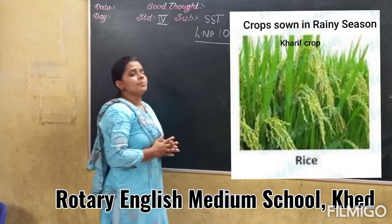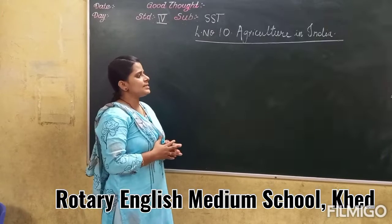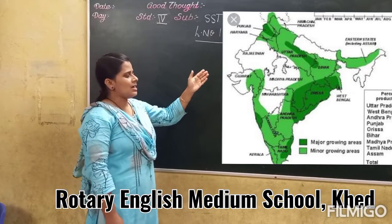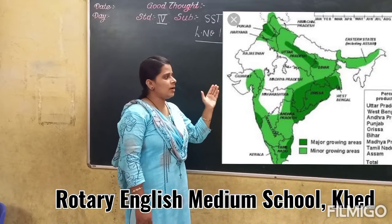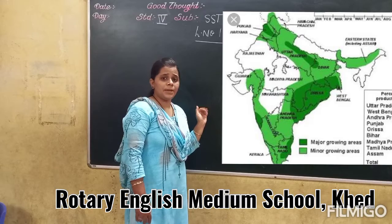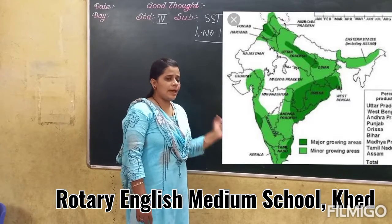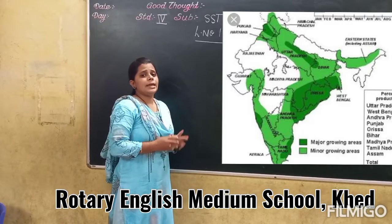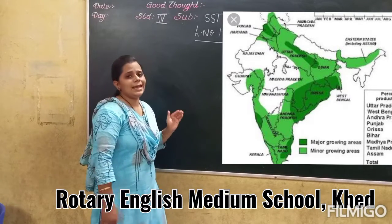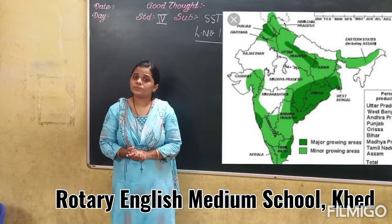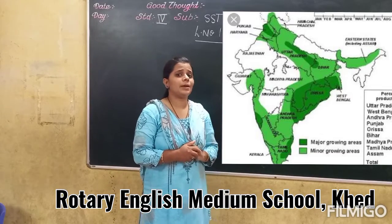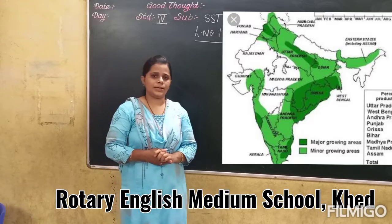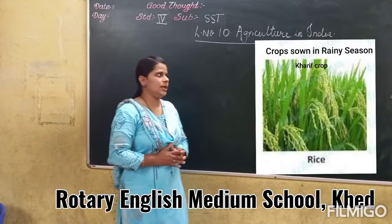States that produce rice include West Bengal, Bihar, Assam, Uttar Pradesh, Jharkhand, Odisha, Tamil Nadu, Andhra Pradesh, and Kerala. India is the world's second largest rice producer after China.